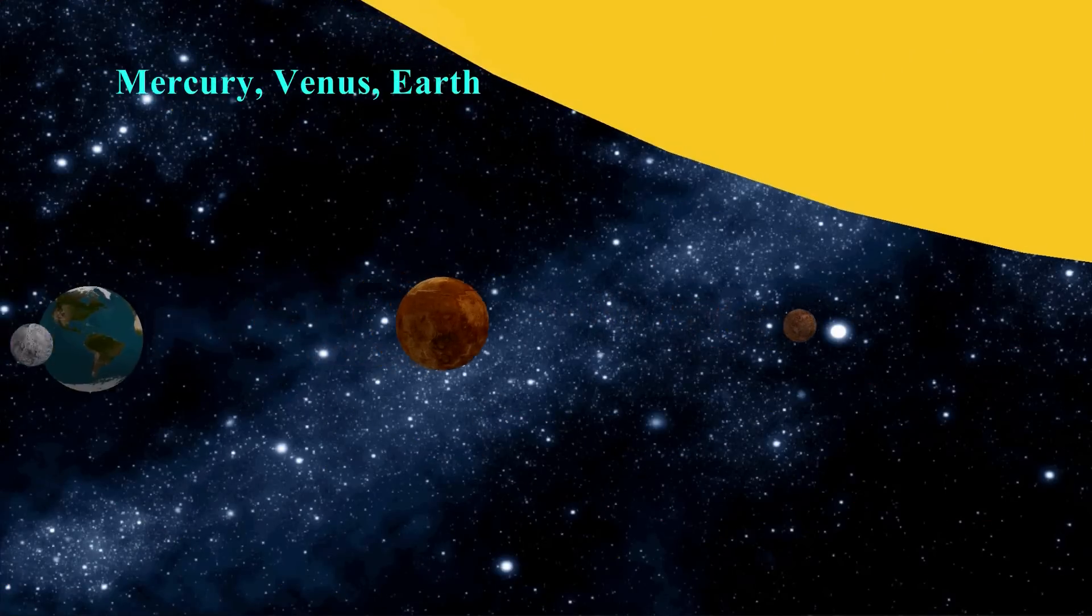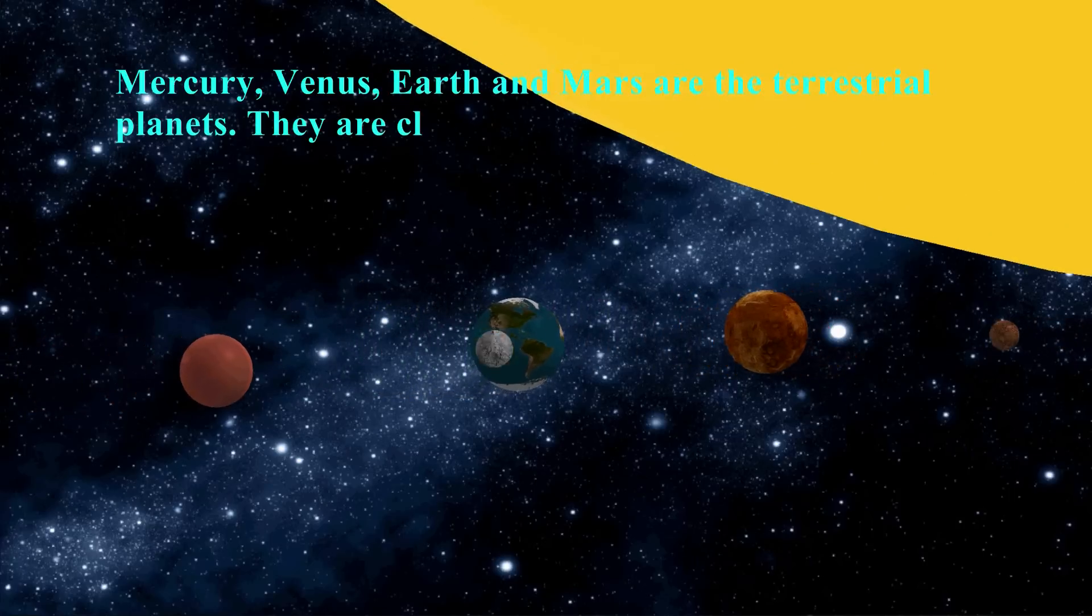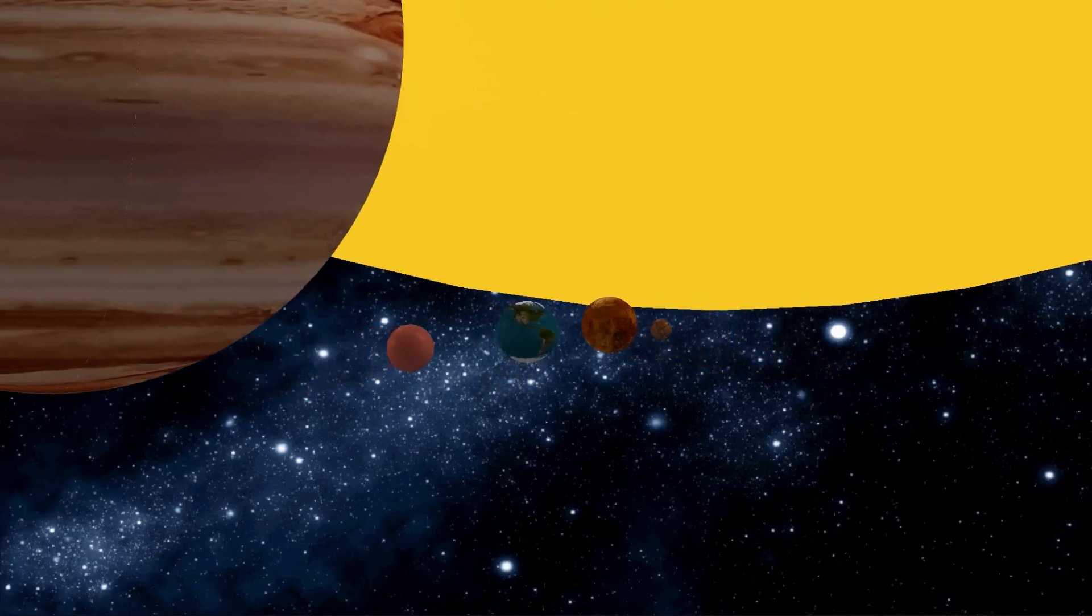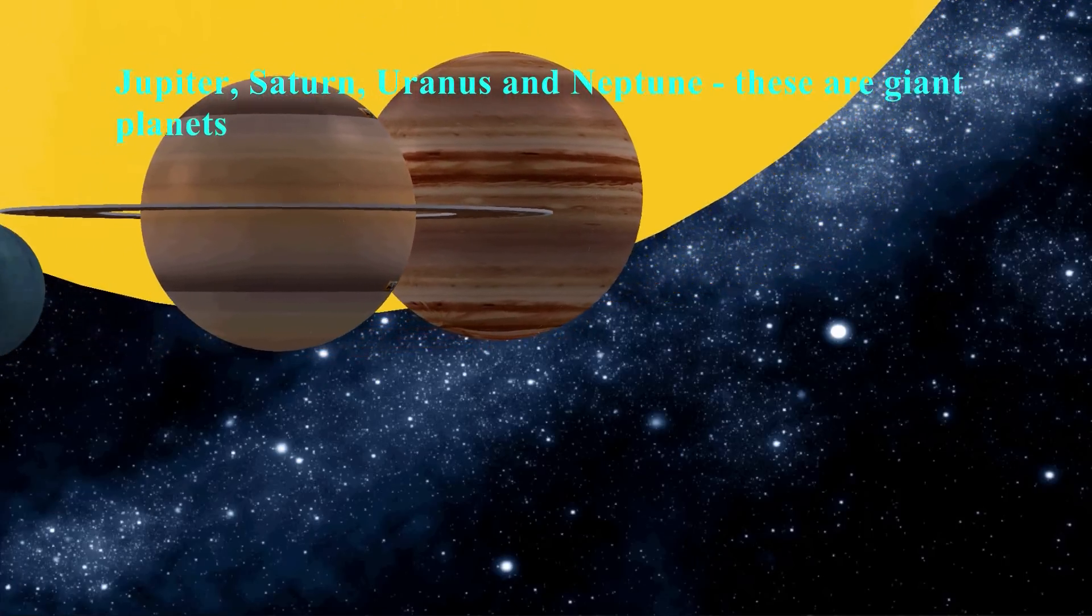Mercury, Venus, Earth and Mars are the terrestrial planets. They are closest to the Sun. Jupiter, Saturn, Uranus and Neptune. These are giant planets or gas giants.